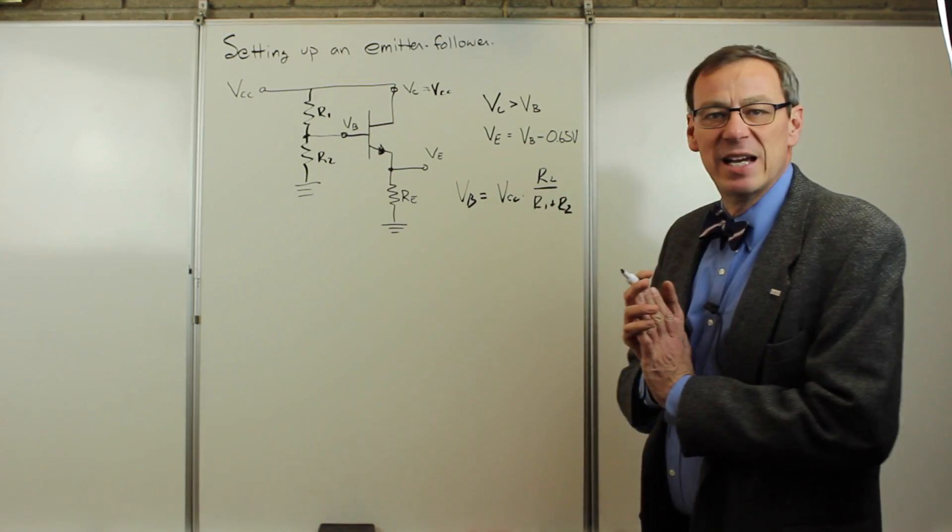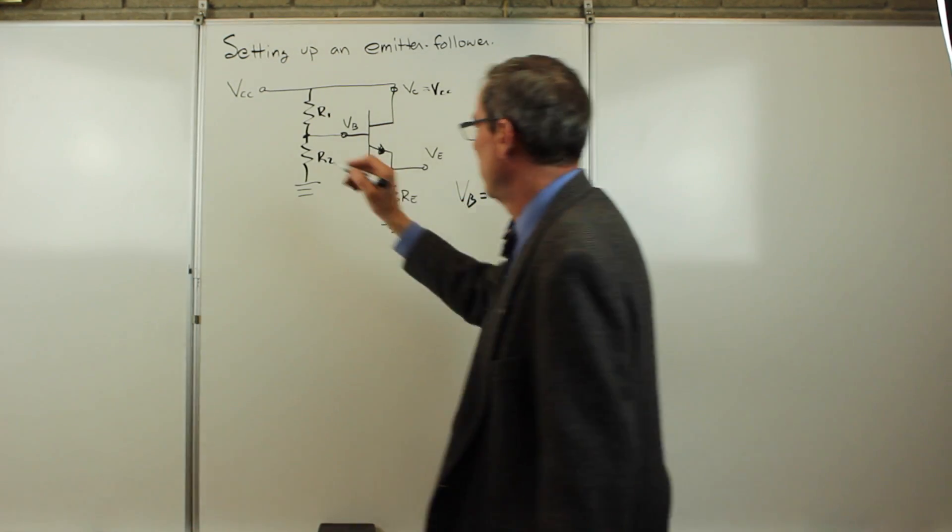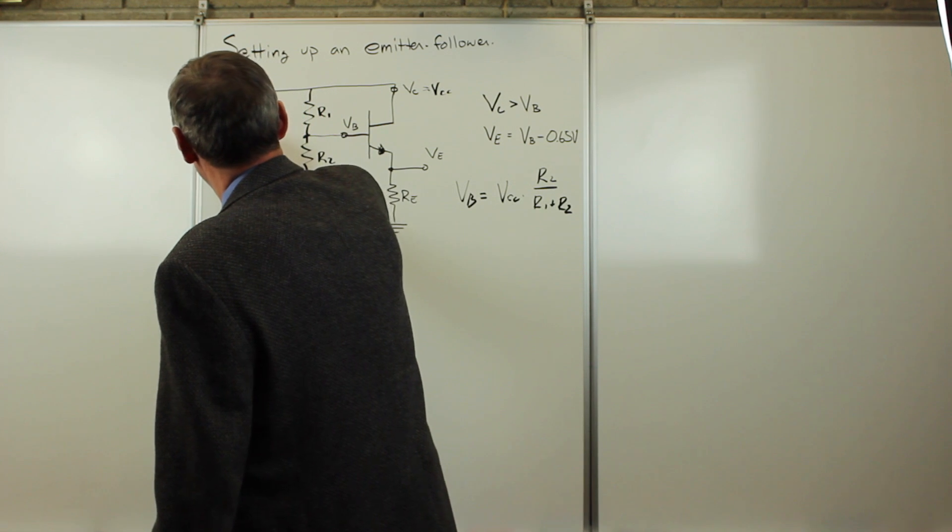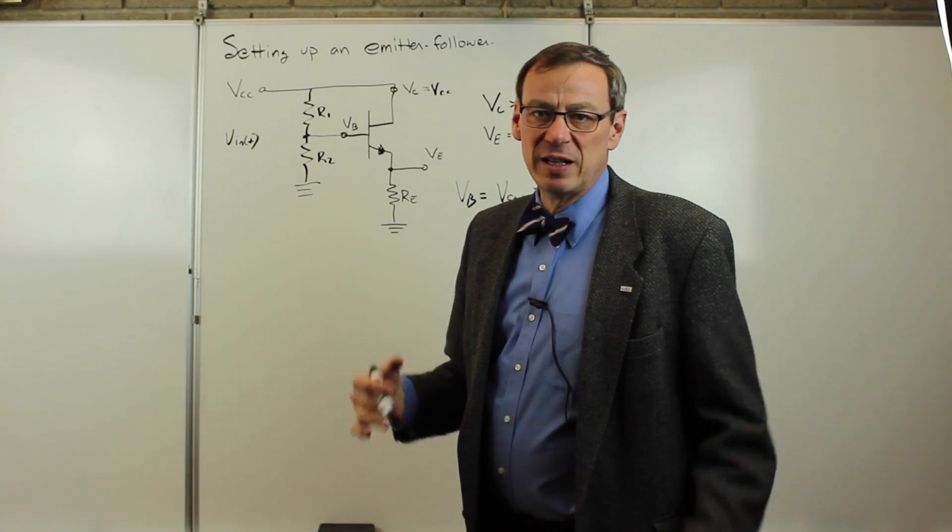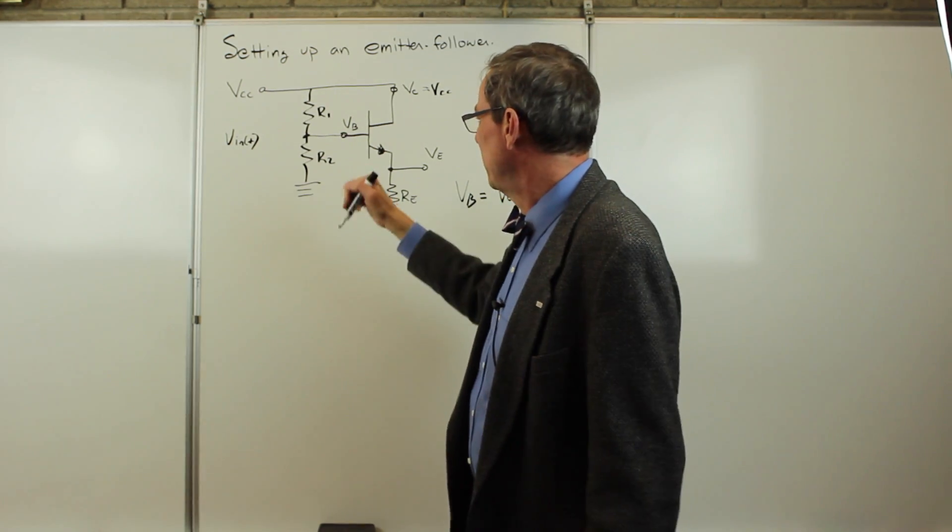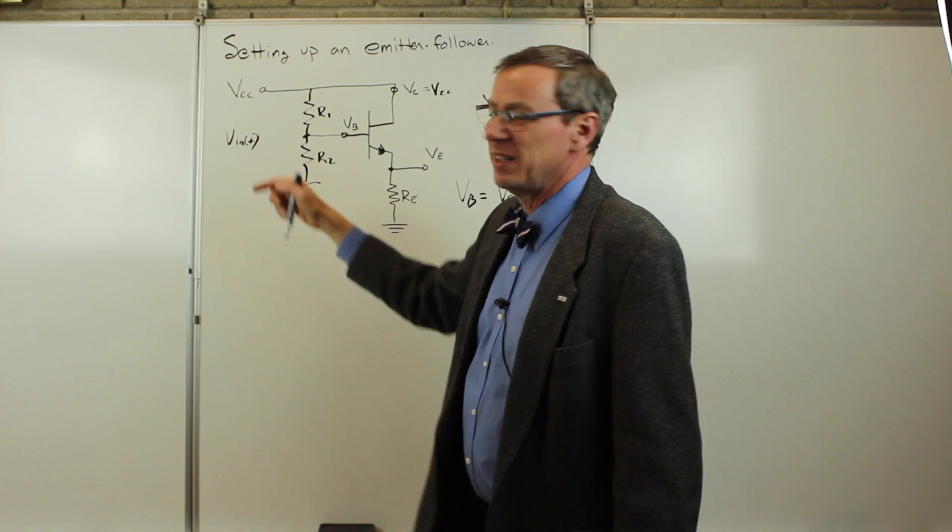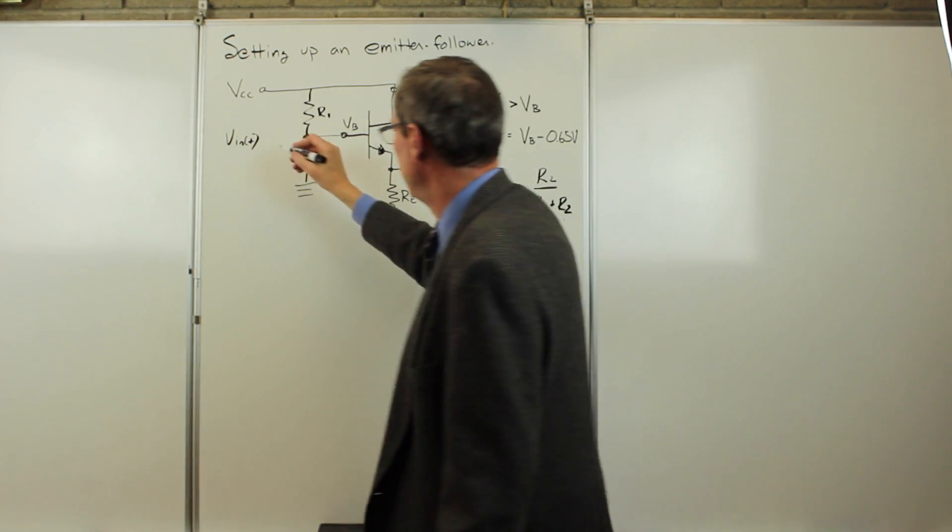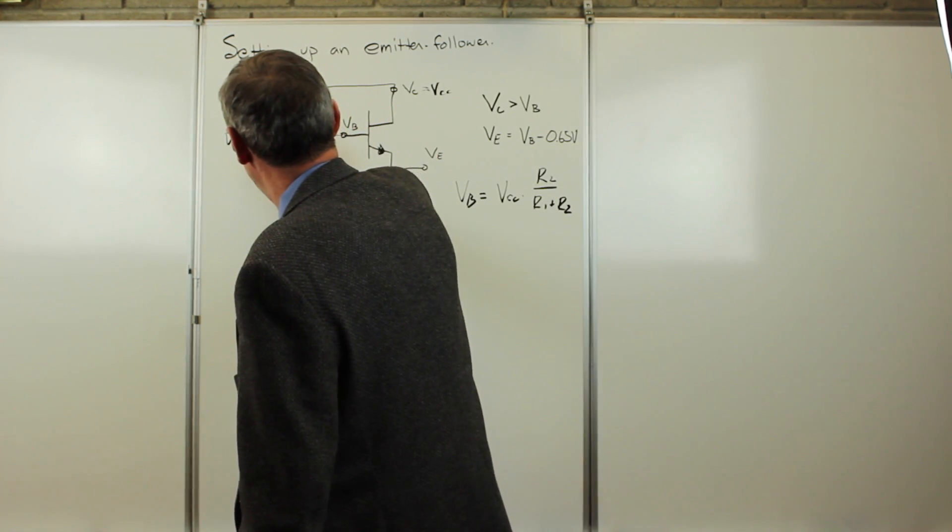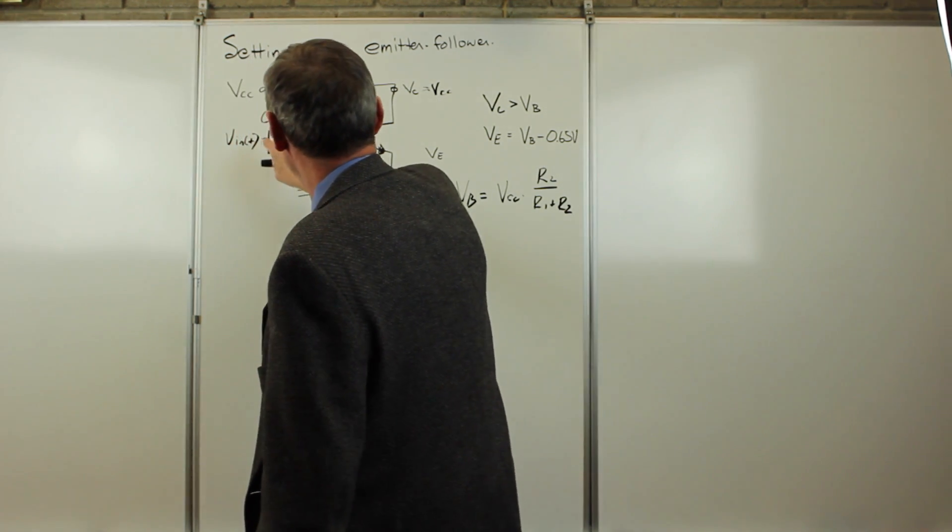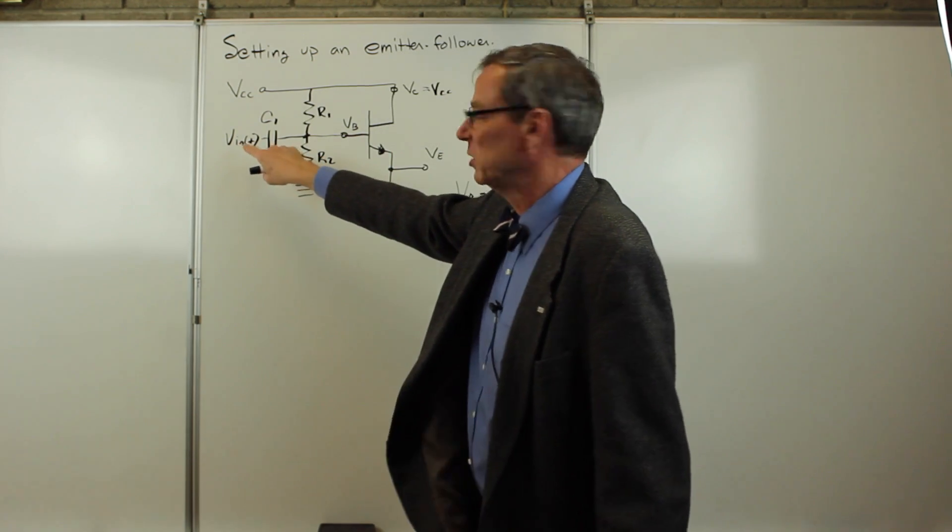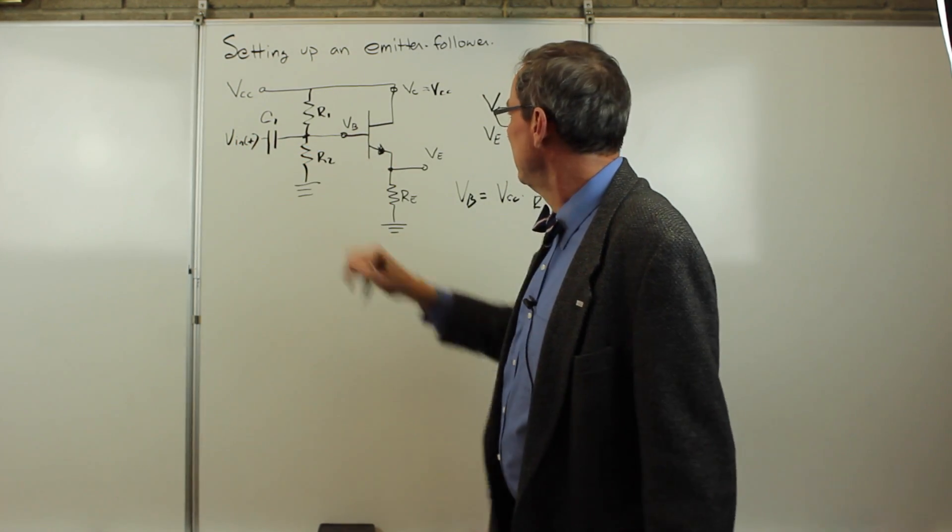Now we need to get the AC signals in and out of this. We have some VIN of t, which we're going to put in here. We'd like to connect that in there and block the DC signal from going into the AC. We're going to do that with a capacitor C1, which forms a high-pass filter for the input and doesn't let any DC go through.